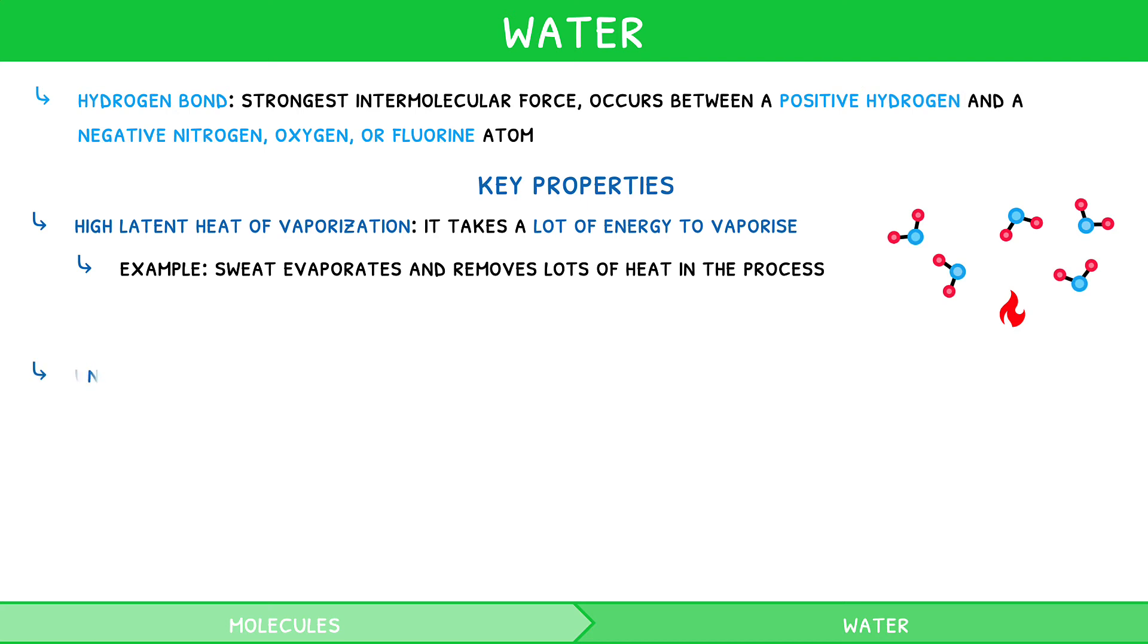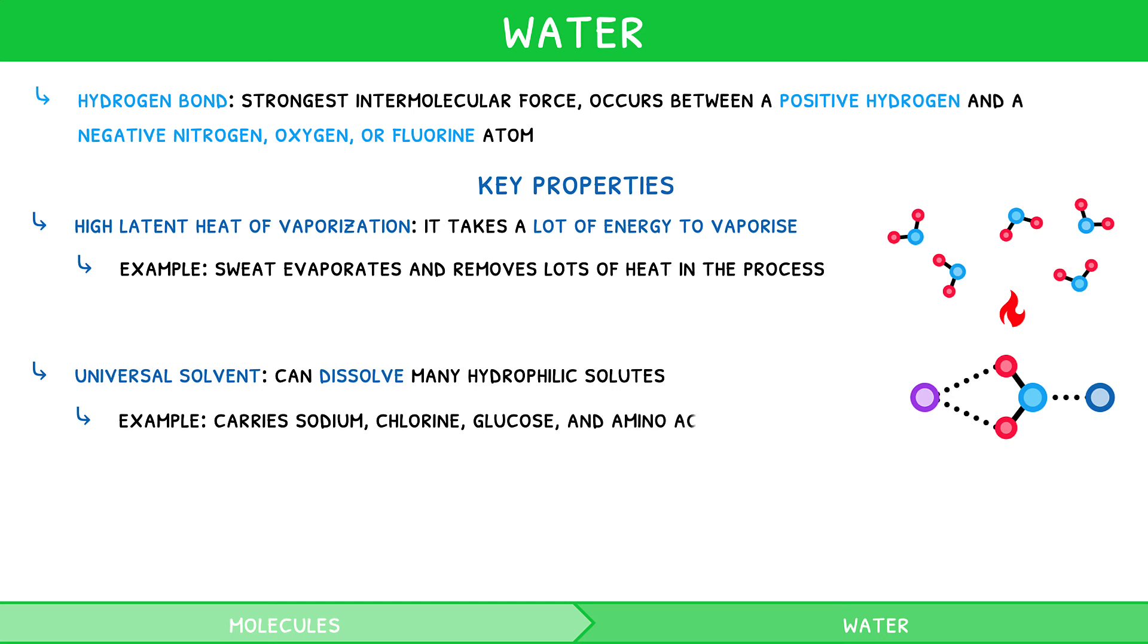Water is a universal solvent. This means that water can dissolve many hydrophilic solids. An example is how water carries sodium, chlorine, glucose, and amino acids in the blood. It is worth noting that other hydrophobic components of blood, such as oxygen, cholesterol, and lipids, are transported using specific carriers.